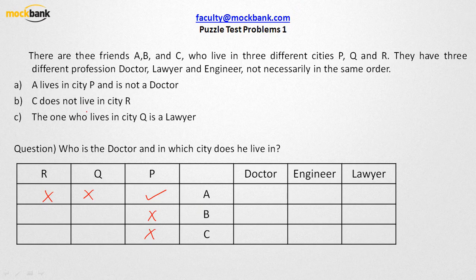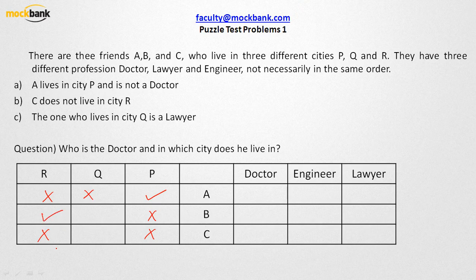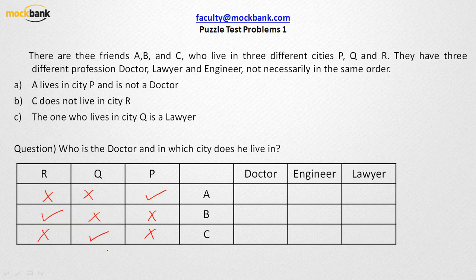Now let us see another piece of information: C does not live in city R. We can also appreciate that since A lives in city P, he cannot stay in R. Now the second direct information is C does not live in city R. If C does not live in city R, who is going to stay in city R? B is going to stay. Now since B stays in city R, A cannot stay in Q, B cannot stay in Q — so who is going to stay in city Q? C is going to stay.